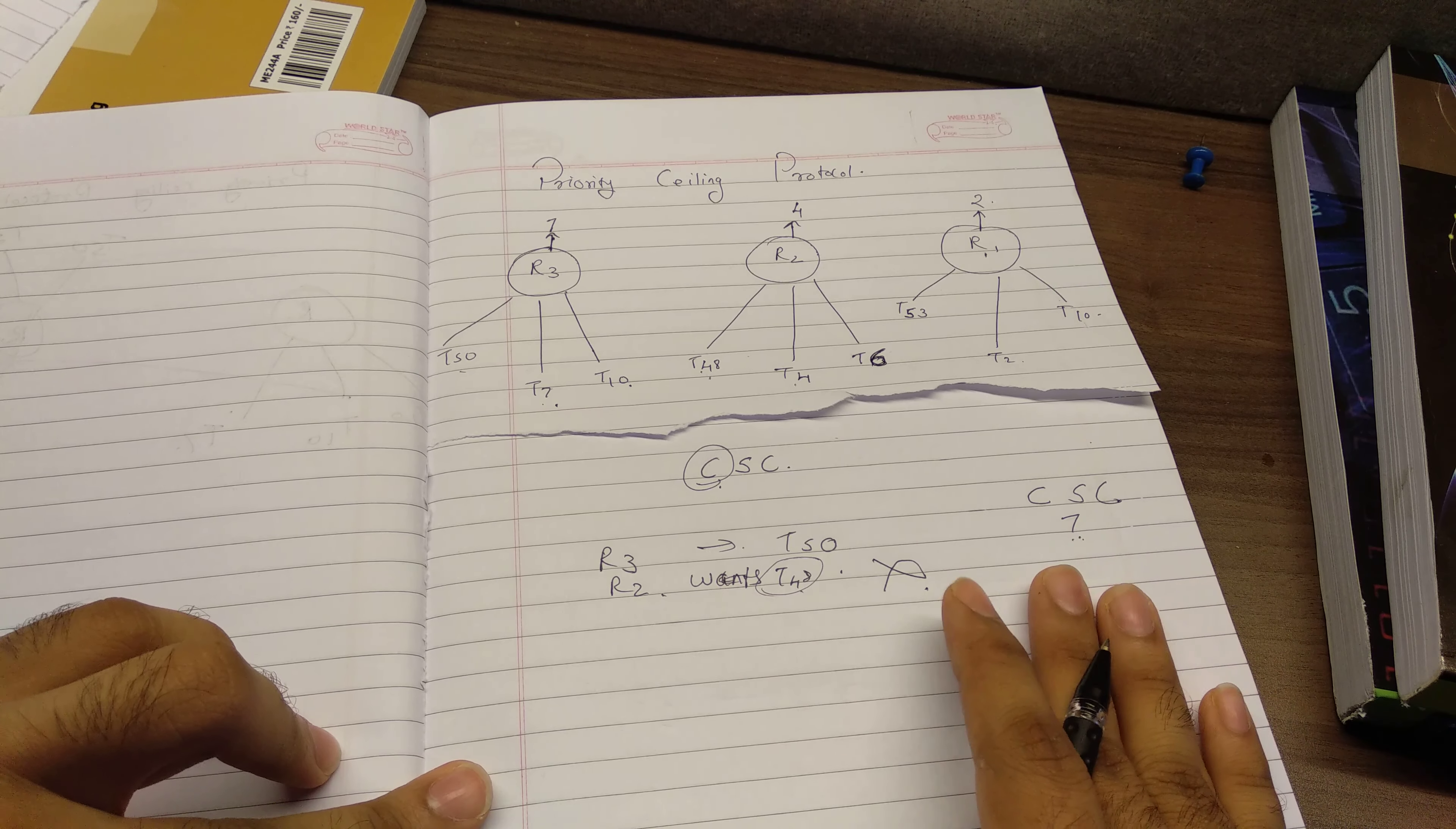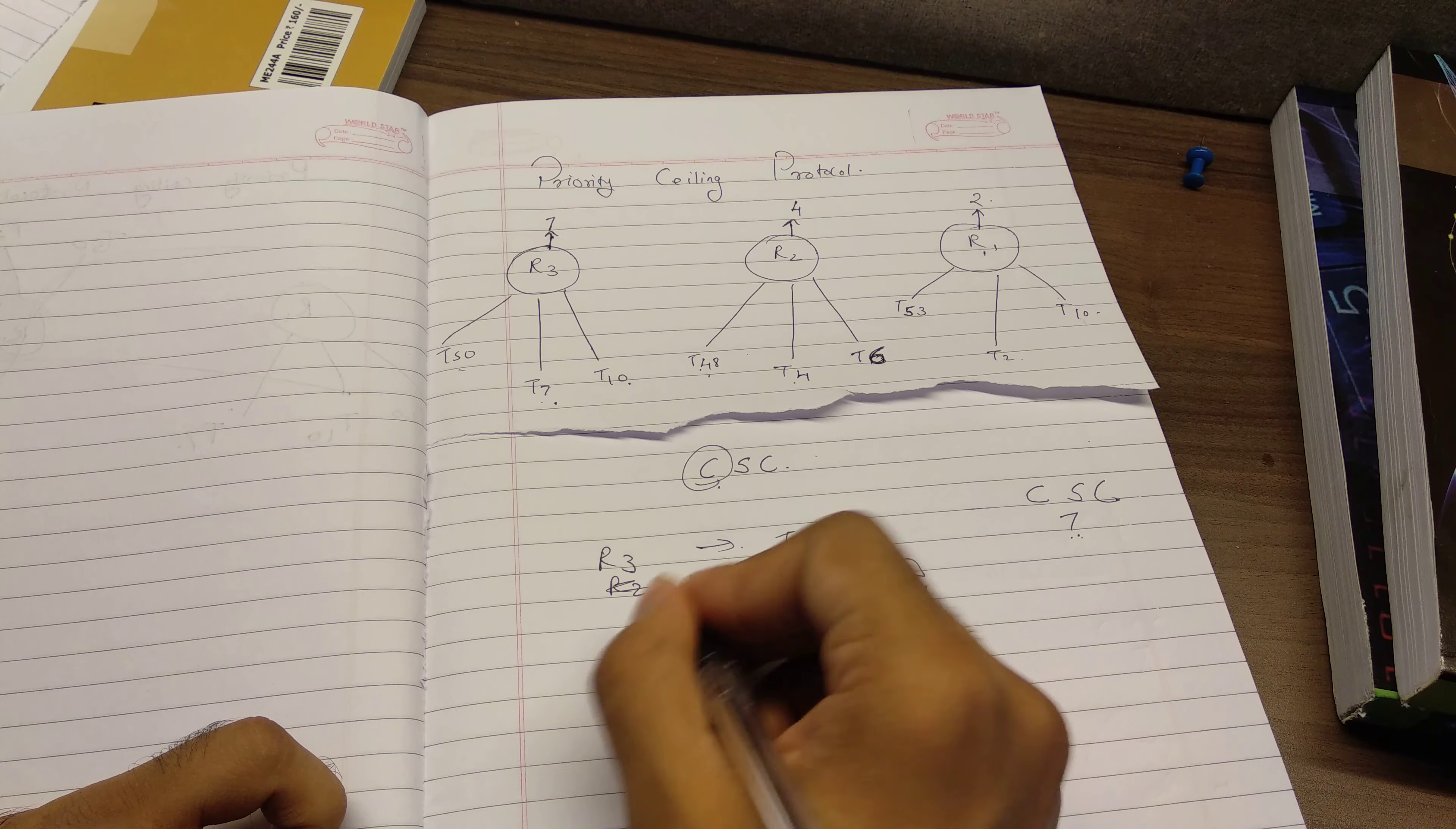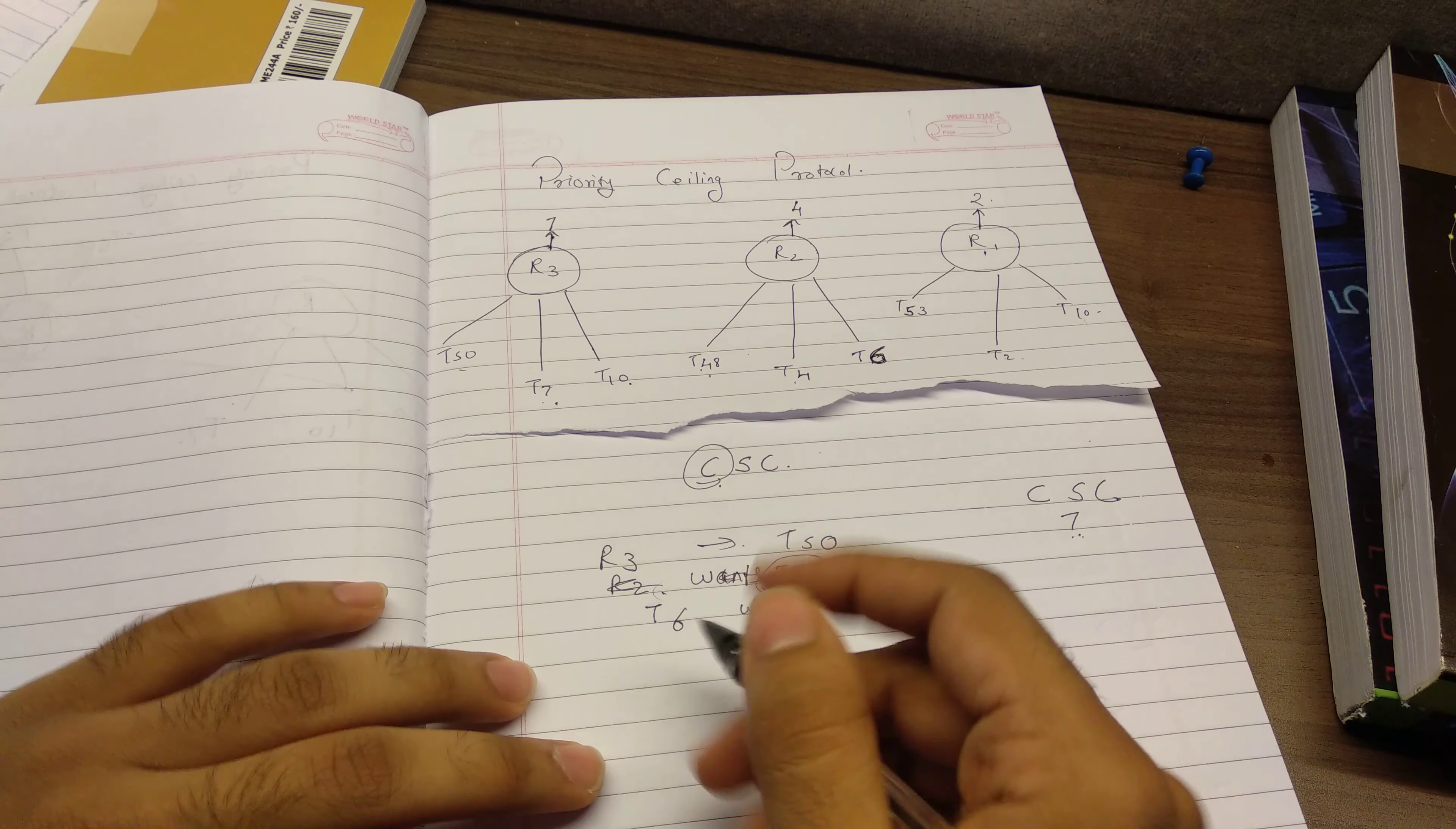It should either be, the priority of the function should strictly be less than the current system ceiling. So, for example, now, this is the same. If T6 wants R2, now it will be compared with the current system ceiling, current system ceiling is 7, 6 wants R2, 6 is the God, 6 will be given the resource.